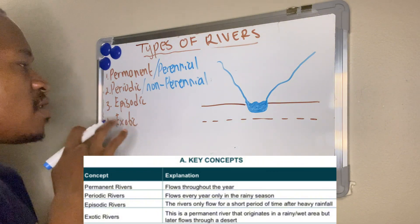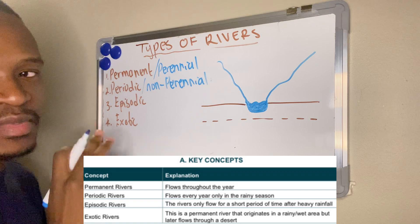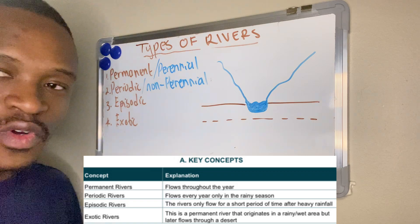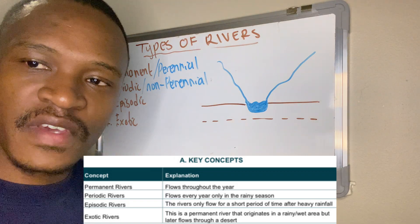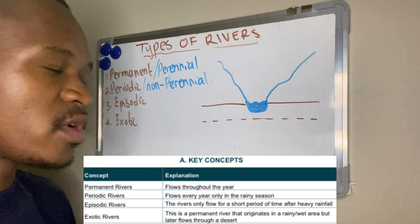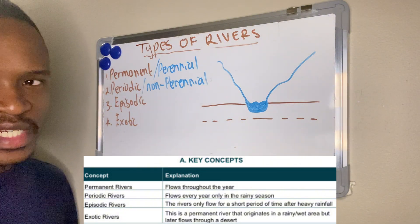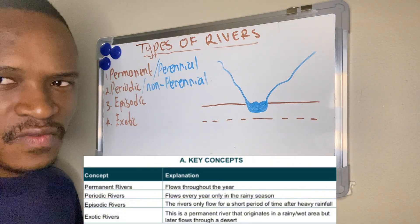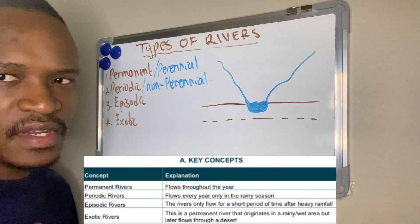Number three, we have an episodic river. An episodic river flows after a period of heavy rainfall, and it flows for only a short period of time after that heavy rainfall.